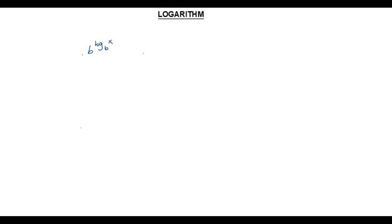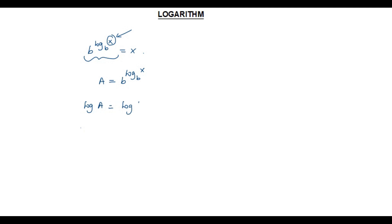Let us look at the next property on logarithm. Here we are going to find the value of an expression in which we have a logarithm as an exponent, where the base of the expression and the base of the logarithm are the same. The value of such an expression equals x, the argument of the logarithm. Let me assume the value of the given expression is a, that is: a = b to the power of log x to the base b. To find the value of a, I am going to take logarithm on both sides: log a = log of b to the power of log x to the base b.